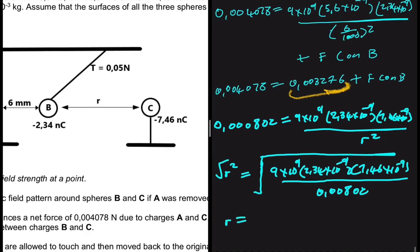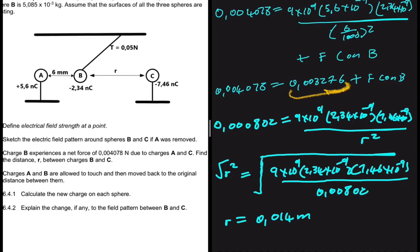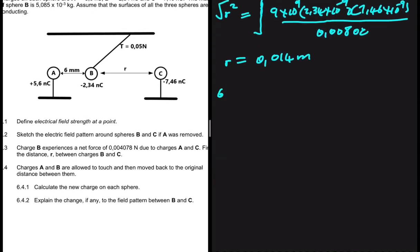We take square root on both sides. R equals 0.014 meters. And just like that, we have solved 6.3.